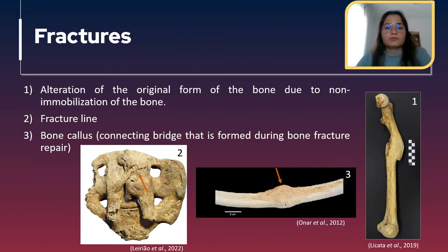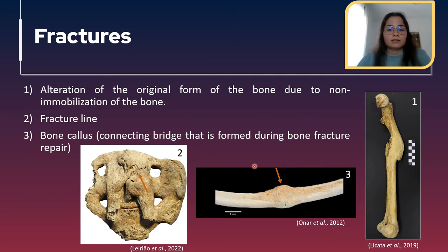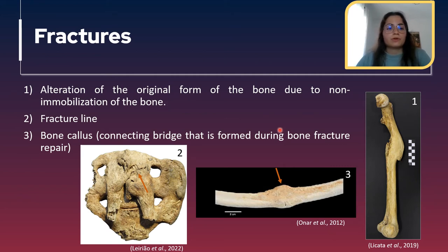There are several types of traumas. Starting with fractures — we can identify them by seeing different things. First, we know a fracture happened when there's an alteration of the original form of the bone, as you can see with this femur. We can also find the fracture line — this is a sacrum in posterior view and this line here is the fracture line. Most frequently we find a bone callus, as seen here in this rib. The bone callus is a connecting bridge formed during bone fracture repair.